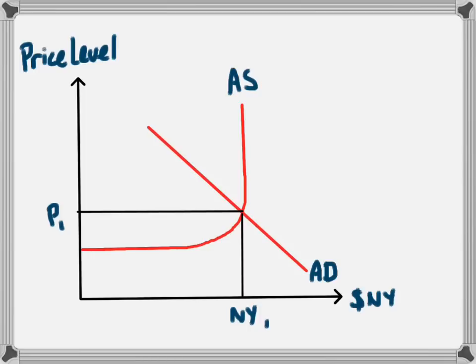They will explain how we arrive at this equilibrium and why the curves look the way that they do, but if you already know, then we have an aggregate supply curve, an aggregate demand curve, giving us an equilibrium level of national income of NY1 and an equilibrium price level of P1.